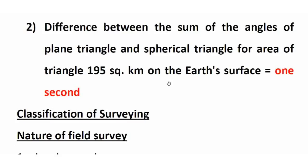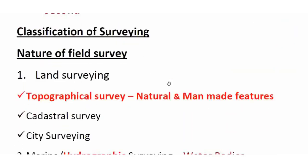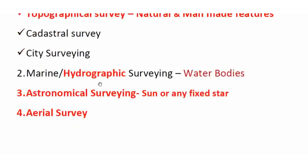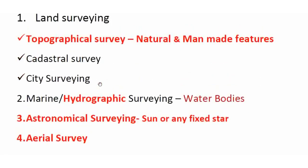Next, classification of surveying based on nature of field: primary division is plane surveying and geodetic surveying. Based on the nature of the field surveyed, types include land surveying, hydrographic or marine surveying, astronomical surveying, aerial surveying, topographical surveying, cadastral surveying, and city surveying.